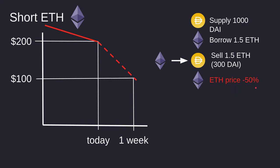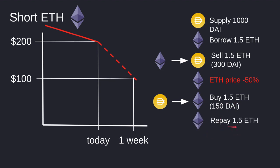1.5 ETH times 200 per ETH gives me 300 DAI. One week later my prediction was correct and the ETH price went down by 50% — it was 200 a week before and now it is 100. I think it's time to claim profit, so I'm going to take the 300 DAI that I have and buy back the 1.5 ETH that I borrowed. The price of ETH today is 100, so I'll spend about 150 DAI to buy back the ETH I need to repay. I repay the 1.5 ETH to Compound and I'm left with 150 DAI in profit.